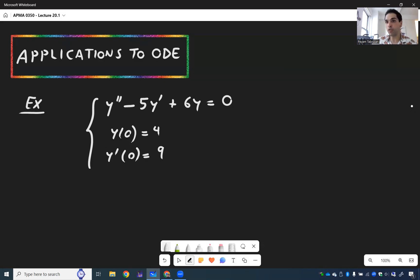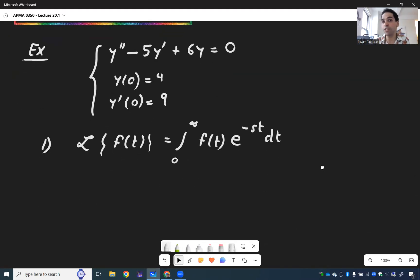For this, I would like to remind you three things. First of all, the Laplace transform of a function is just the integral from 0 to infinity of that function times e of minus st dt. So like a weighted average of f with e of minus st. We won't really need the definition here.